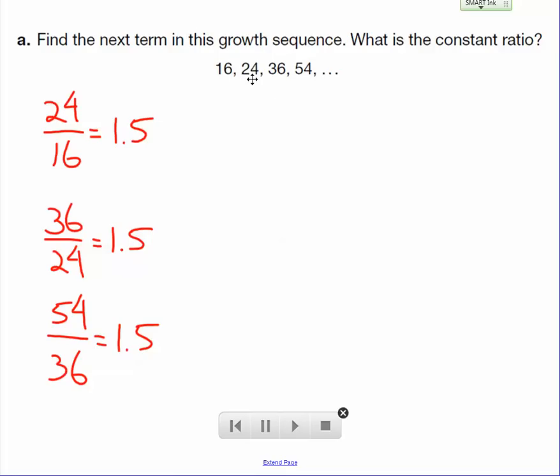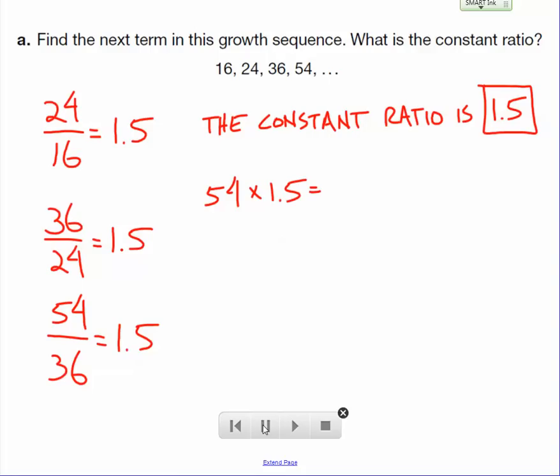24 divided by 16, 36 divided by 24, 54 divided by 36, which tells me that the constant ratio is 1.5, meaning if you multiply the previous term by 1.5, you'll get the next term. All we have to do is take 54 and multiply it by 1.5, and we'll get 81.